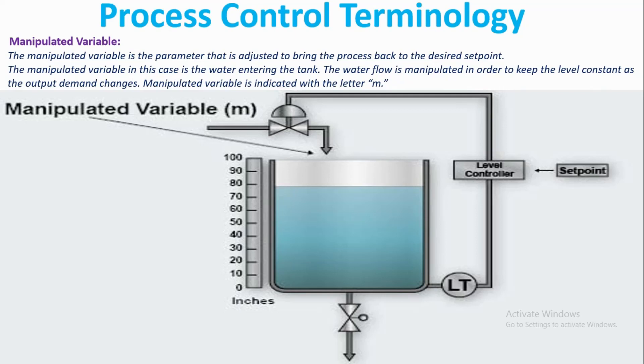The manipulated variable in this case is the water entering the tank. The water flow is manipulated in order to keep the level constant as the output demand changes. Manipulated variable is indicated with the letter M.